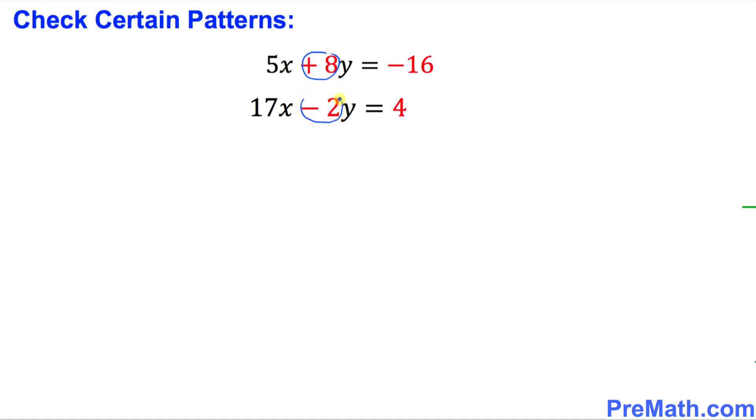Be careful with this thing. Coefficient of y and these highlighted numbers that I'm going to circle. Once again, as we did in the previous example, we're going to cross multiply these numbers. 8 times 4 is going to be 32.